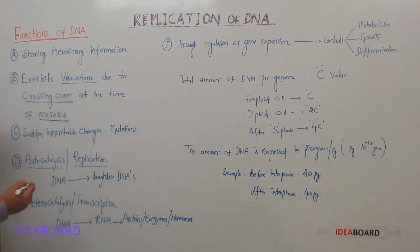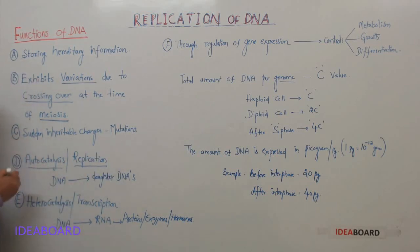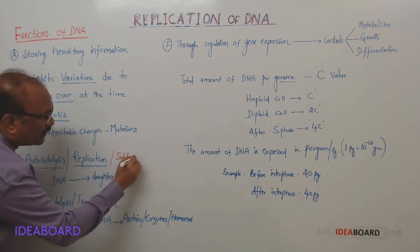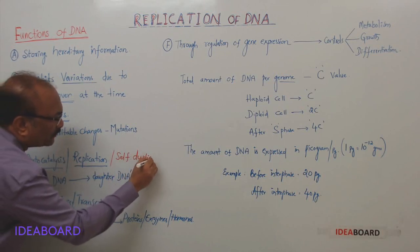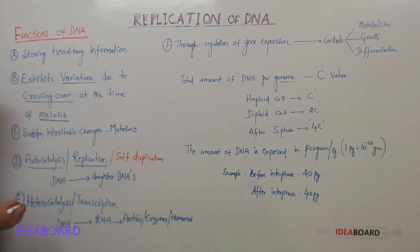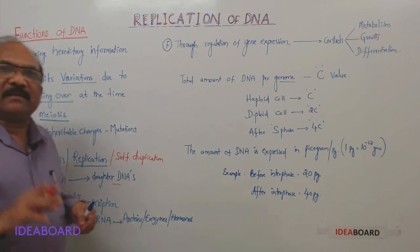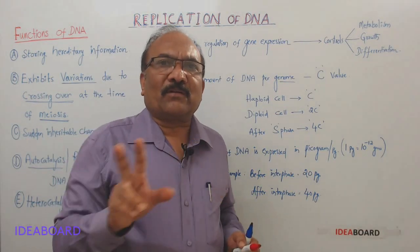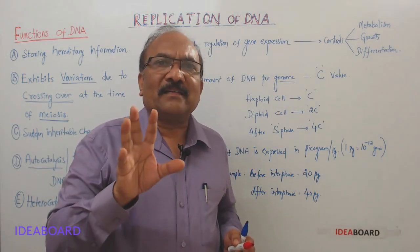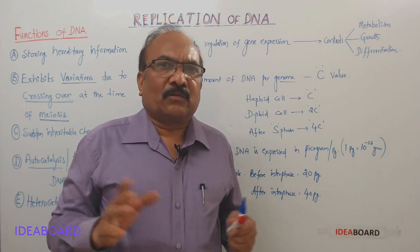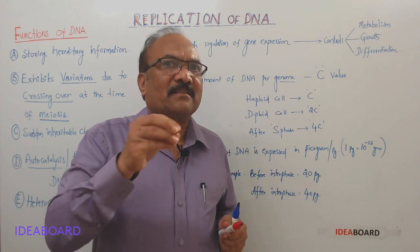During replication, from the parent DNA, daughter DNAs are formed. One parent DNA will split into two daughter DNAs which are exactly identical. This is auto-catalysis or self-duplication, and when this happens we will discuss later.